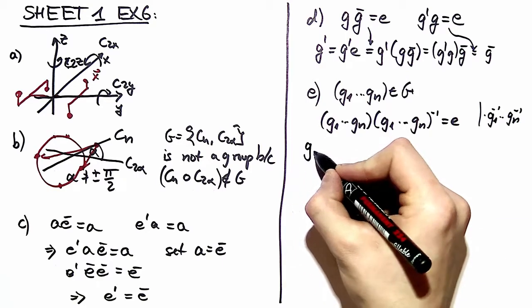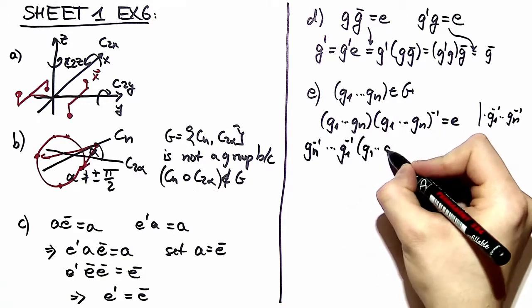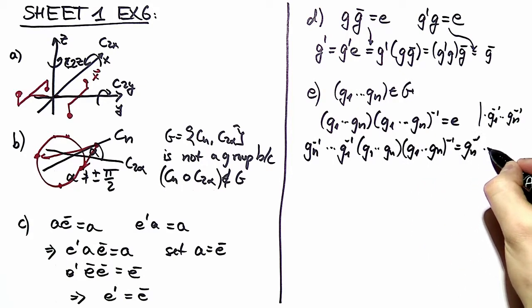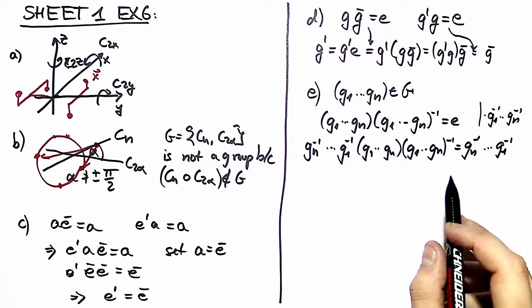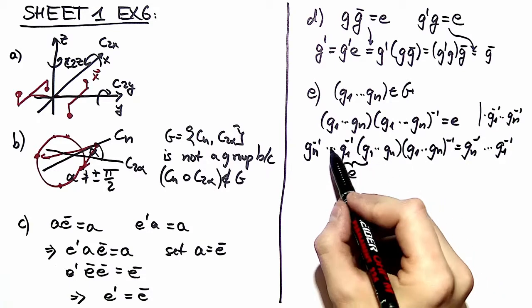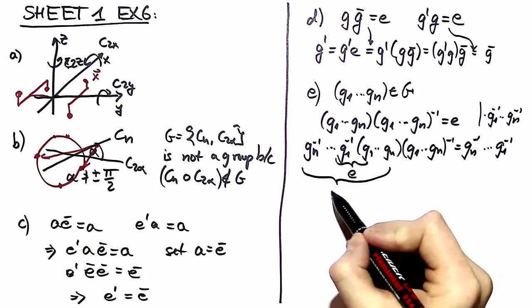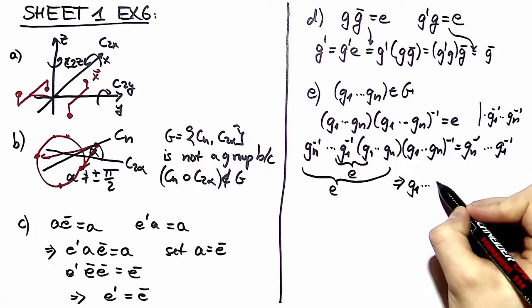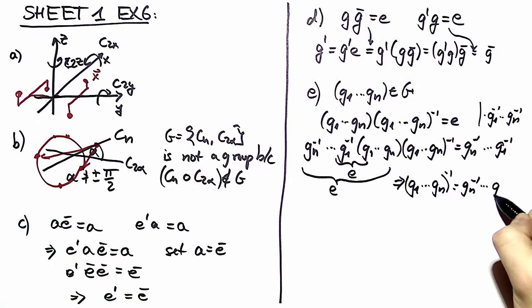So I write that down again. We have gn to the minus one times dot dot dot times g one to the minus one times our original element times its inverse is equal to gn to the minus one to g one to the minus one. Now as we've seen before this is the identity and this element can be left out. We've got g two to the minus one times g two, this is an identity again, and we can do that n times. So we're left with the expression gn to the minus one times g one to the minus one.